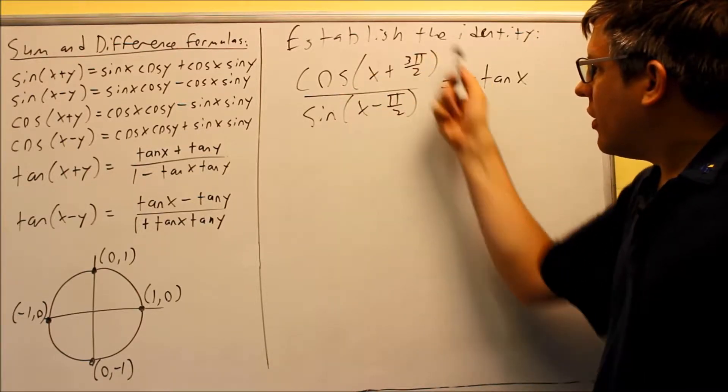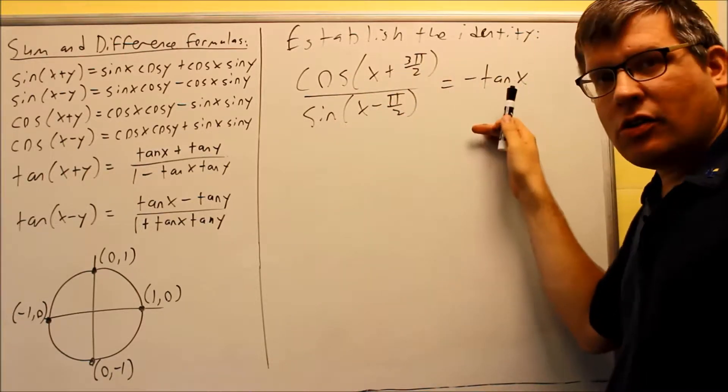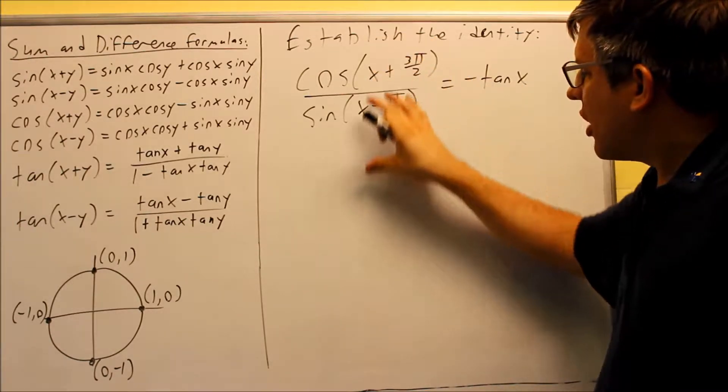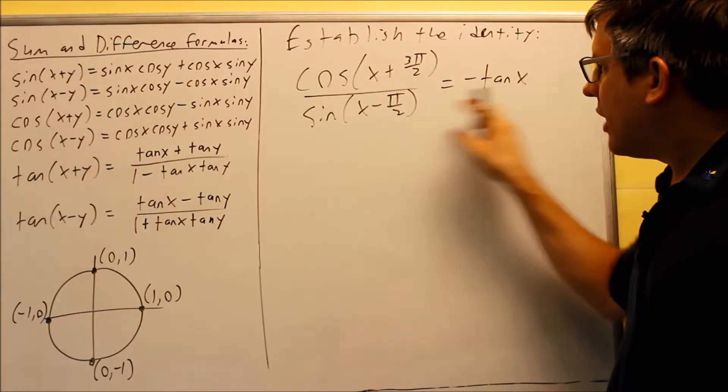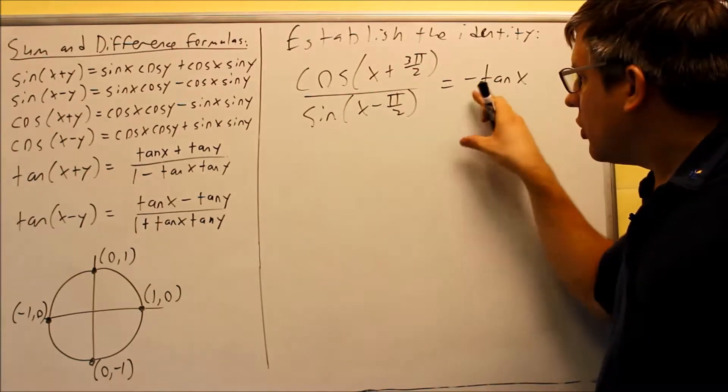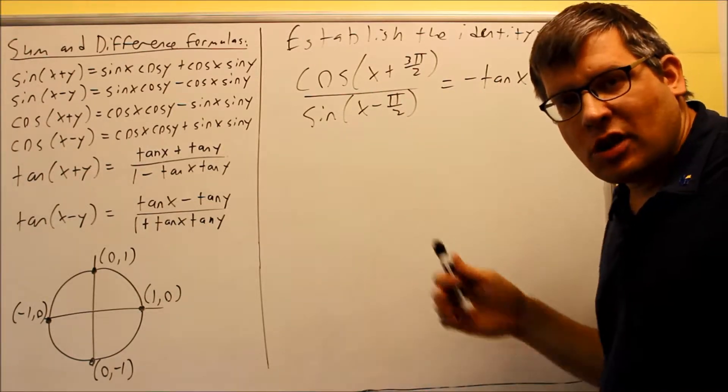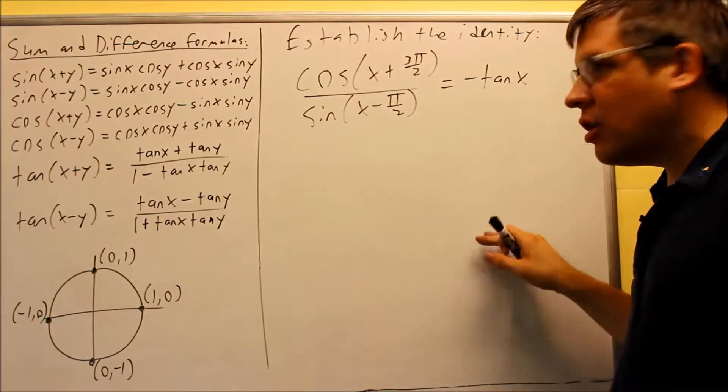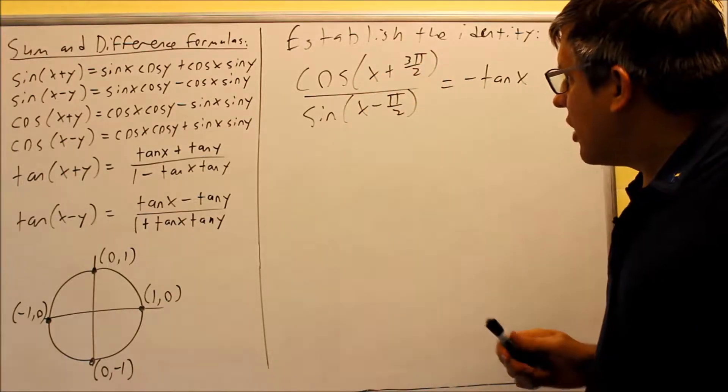We want to show that this side can be simplified down into this side. So remember when we do these kinds of things, you're working with one side all the way down. This equal sign, you're not allowed to do processes on both sides because we don't know for sure, we haven't established that it's an identity. So the idea is we work one side all the way down until we get it equal to the right-hand side.